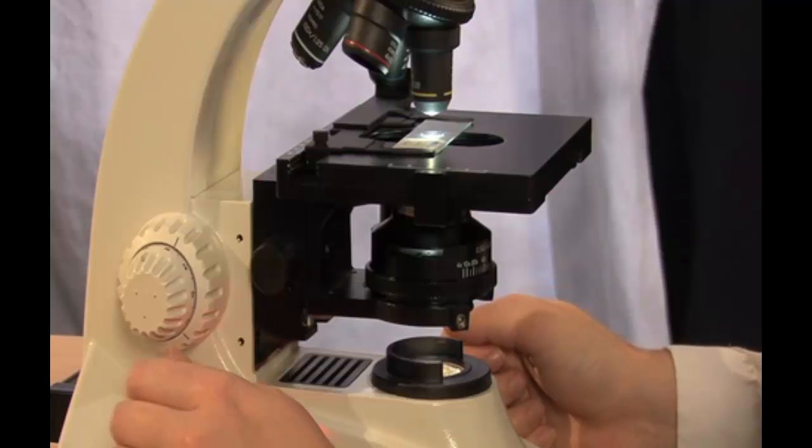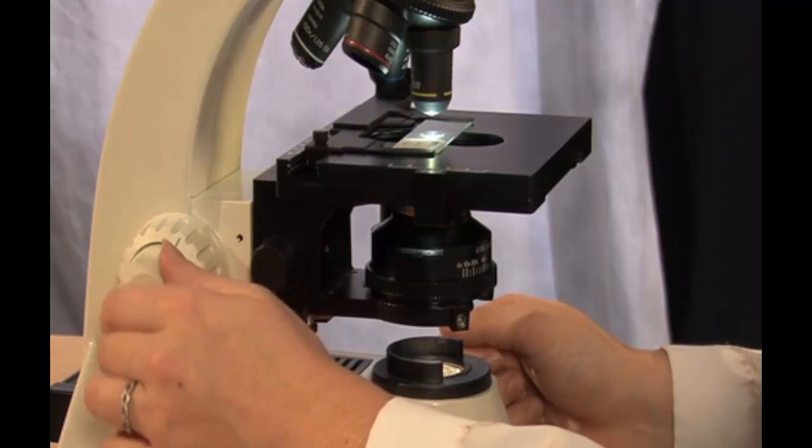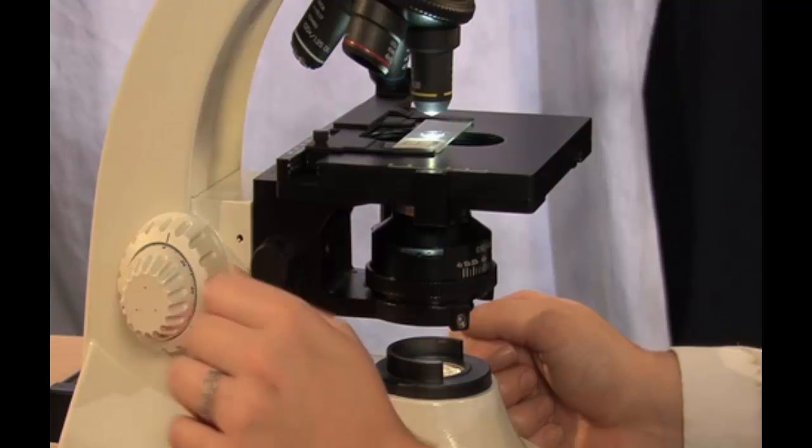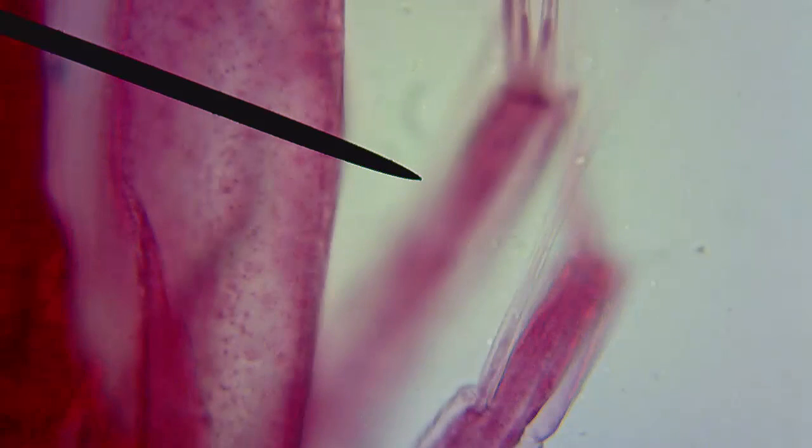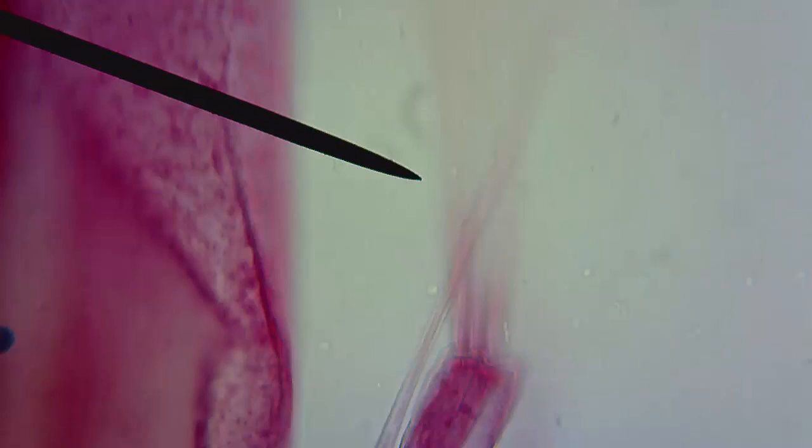In contrast, the inner knob is the fine focus knob. Notice that you do not see much movement with the stage at all when you turn this fine adjustment knob. The fine focus is used for seeing the specimen with more clarity. In other words, for seeing details.